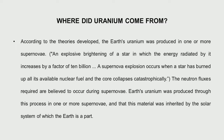Let us have a look at where uranium comes from. It is naturally available, but perhaps the Earth's uranium was produced in one or more supernovae. A supernova is an explosive brightening of a star in which the energy radiated increases by a factor of 10 billion - a huge release of energy. A supernova occurs when a star has burned up all its available fuel. This Earth itself was formed by the Big Bang, in which a part of the Sun exploded and formed the different planets.